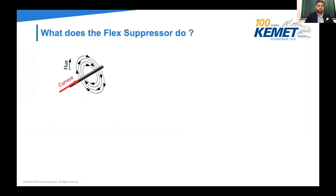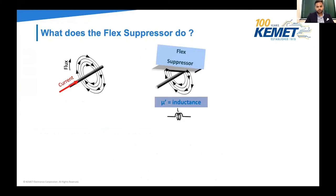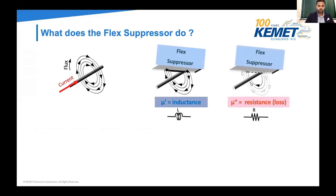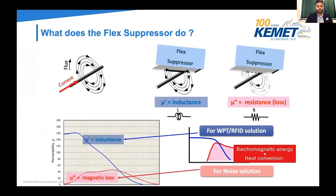How does a flex suppressor work? Think back to high school physics — we have a current going through a line and magnetic flux around it. An important factor is permeability, which is a parameter that shows how much electromagnetic waves a substance can absorb. Permeability has two different characteristics. The first is the inductance characteristic, or mu prime, used in RFID technology to protect or enlarge the flux. Then we have mu double prime, the resistance characteristic, which absorbs high frequency magnetic flux — the cause of noise — and converts electromagnetic energy into small amounts of heat. This is what's used for EMI reduction.